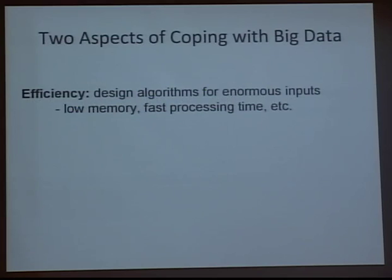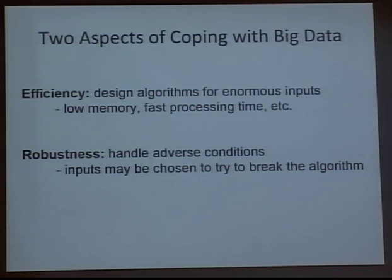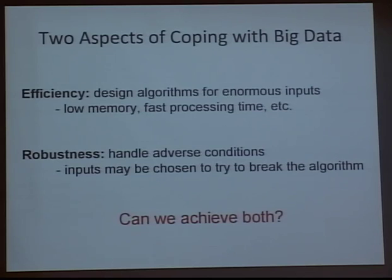This talk is going to cover two aspects of coping with big data. The first is a standard efficiency aspect: you want to design algorithms to handle enormous inputs, with guarantees of very low memory and very fast processing time. We're also going to look at a robustness condition, meaning the algorithm can handle adverse conditions — specifically, inputs may be chosen to try to break the algorithm. We have some randomized algorithm which may use the same randomness to answer different queries, and the querier might try to break its correctness. The big goal is: can we achieve both efficient and robust algorithms?